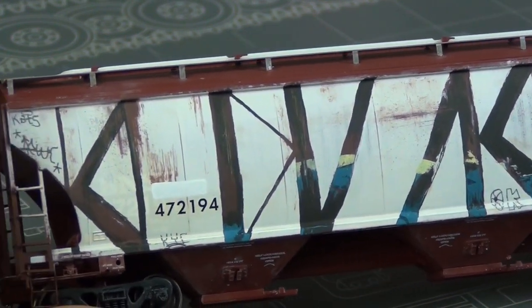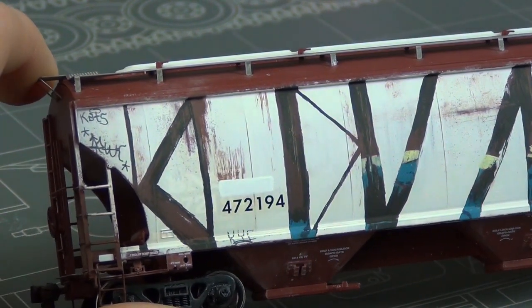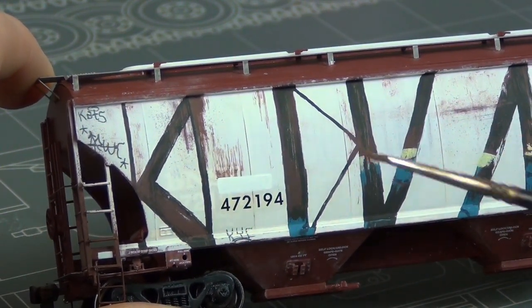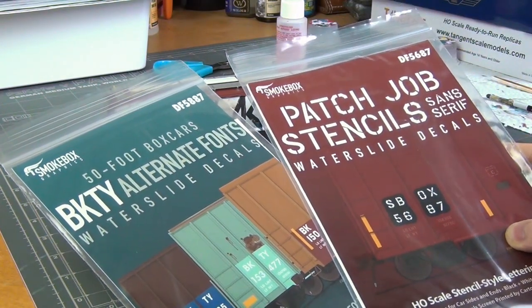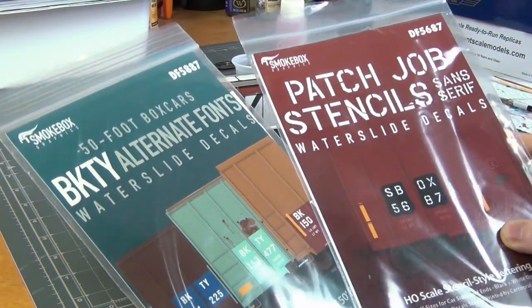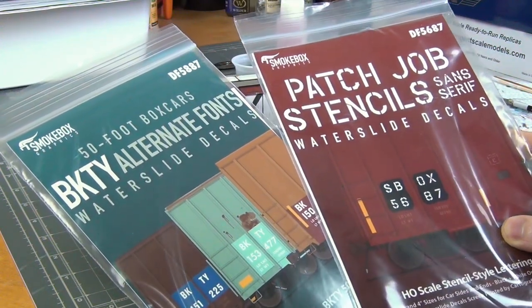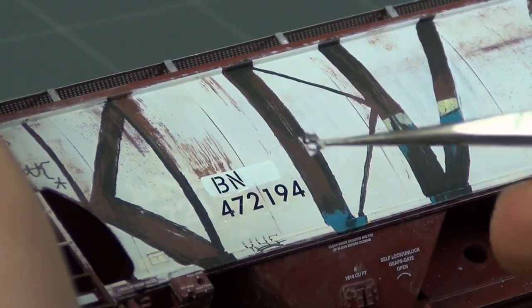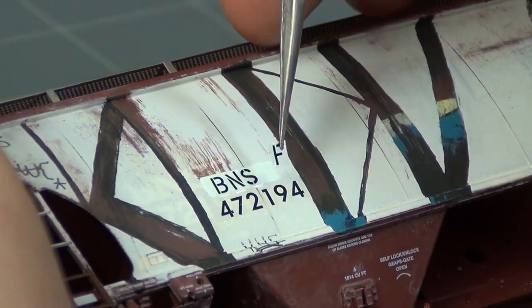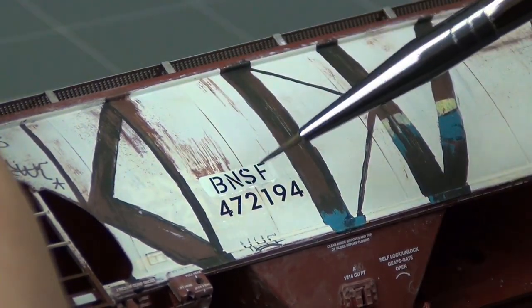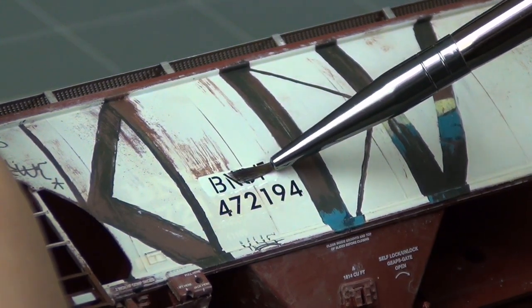Now you can see here I've actually started to do the re-stenciling of the reporting marks. I have a lot of stencil decals here but these ones from Smokebox Graphics are the sets I used for the numbers and the letters. These are really really good decals.